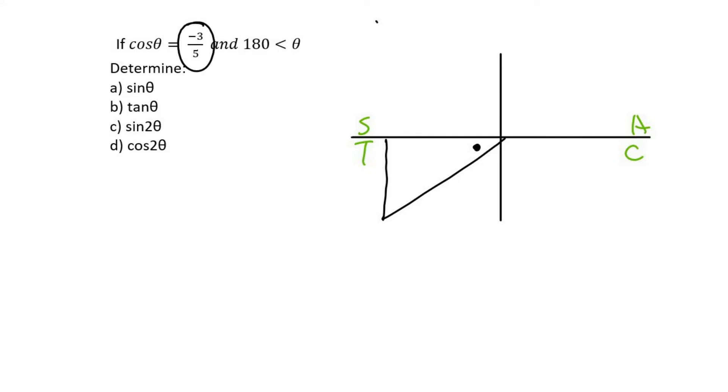Now they say that cos is negative 3 over 5. We know that cos is adjacent over hypotenuse, so adjacent is negative 3 and hypotenuse is 5. To find the missing side in your triangle, you would use Pythagoras.